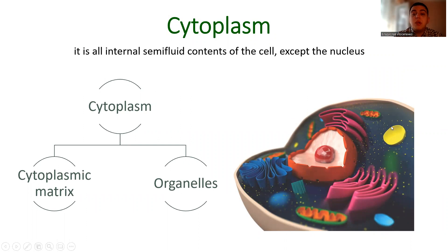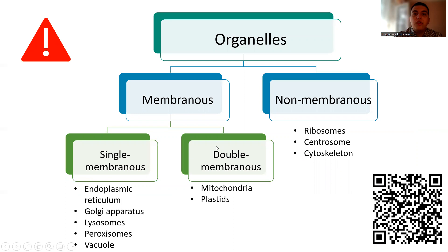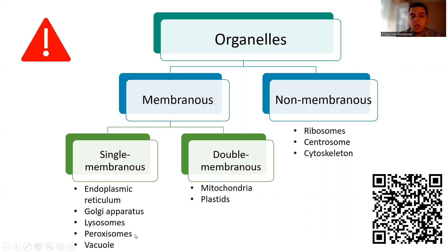The cytoplasm is all the inner semi-fluid content of the cell except the nucleus. It divides into two main parts: the cytoplasmic matrix — the liquid part which contains 90% water and other components — and the organelles. According to their structure, organelles are classified as membranous and non-membranous. Non-membranous organelles include ribosomes, centrosome, and cytoskeleton. Membranous organelles are divided into single-membrane and double-membrane organelles. Double-membrane organelles are mitochondria and plastids. Single-membrane organelles include endoplasmic reticulum, Golgi apparatus, lysosomes, peroxisomes, and vacuoles.